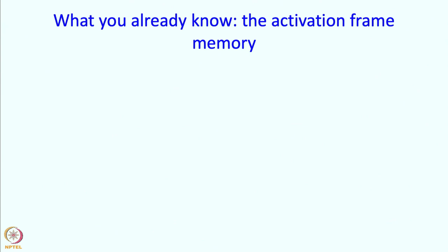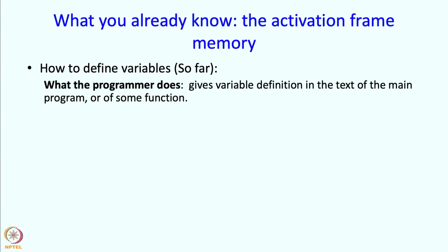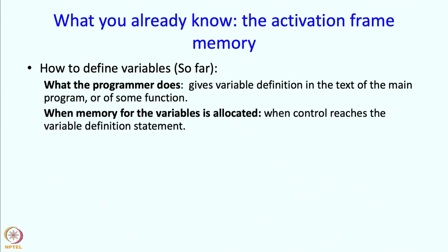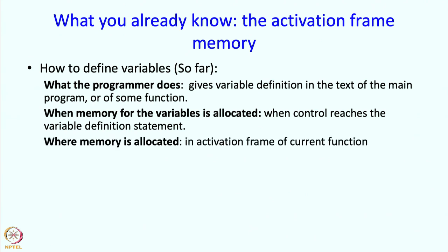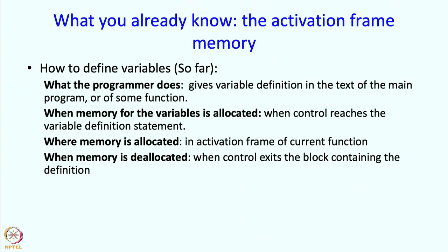Let me begin with what you already know — the activation frame memory. So how do we define variables? So far, the programmer gives variable definitions in the text of the main program or of some function, and the memory for these variables is allocated when control reaches the variable definition statements. The memory is allocated in the activation frame of the current function.